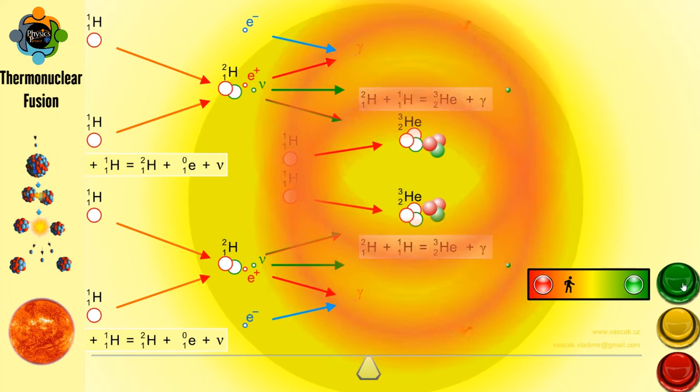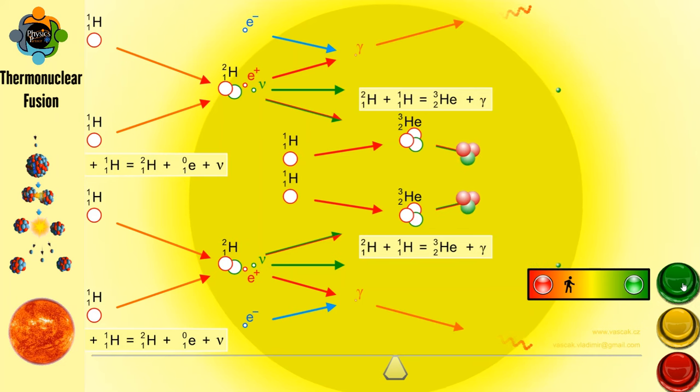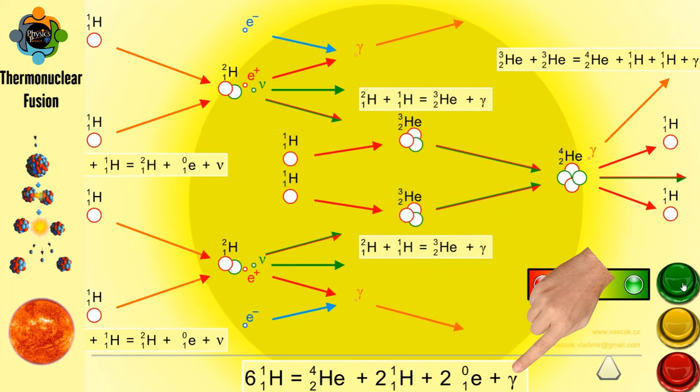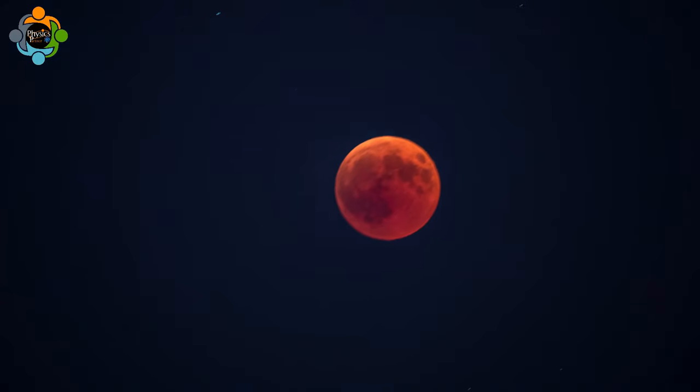This deuterium then fuses with another proton to form helium-3, releasing a gamma ray photon. Two helium-3 nuclei combine to form helium-4, releasing two protons in the process. These reactions release a tremendous amount of energy in the form of gamma rays, which eventually make their way to the Sun's surface and into space.